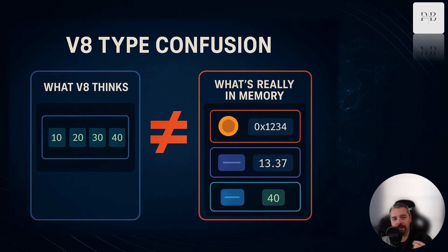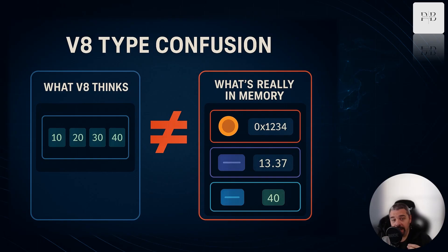To understand why type confusion is dangerous, V8 relies heavily on assumptions to optimize code. If it thinks an array contains only integers, it optimizes aggressively on that assumption. But if an attacker can trick V8 into believing one type is present when another type is actually stored in memory, V8 starts reading the wrong fields, writing into the wrong regions, and suddenly the attacker gains the holy grail of browser exploitation: arbitrary read and write inside the renderer process.